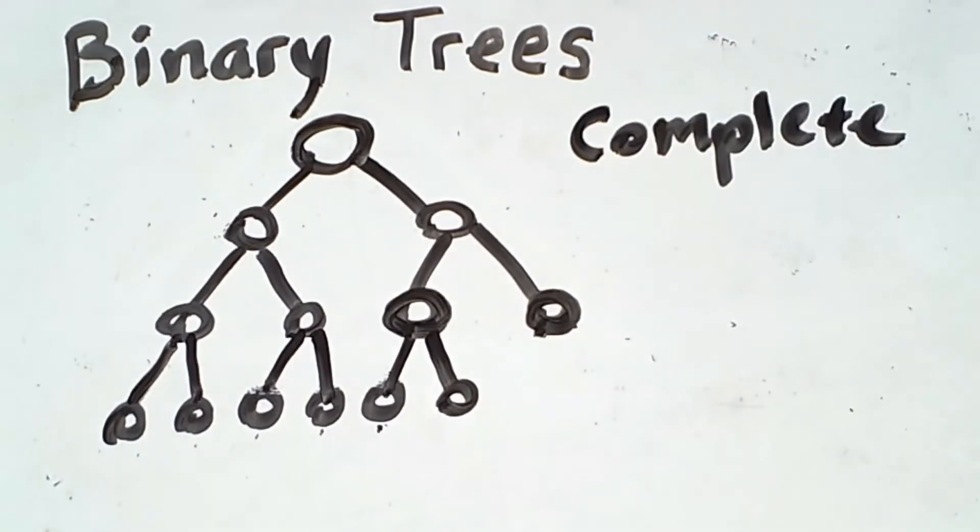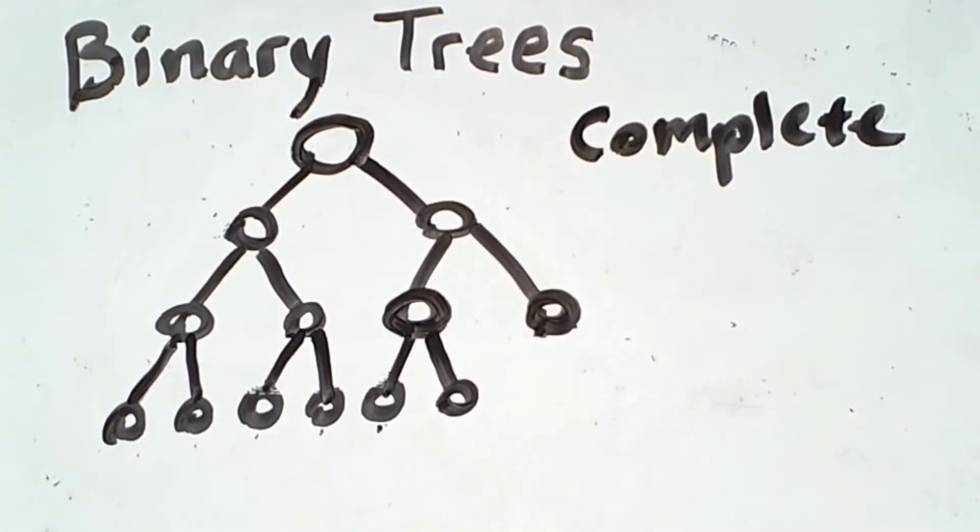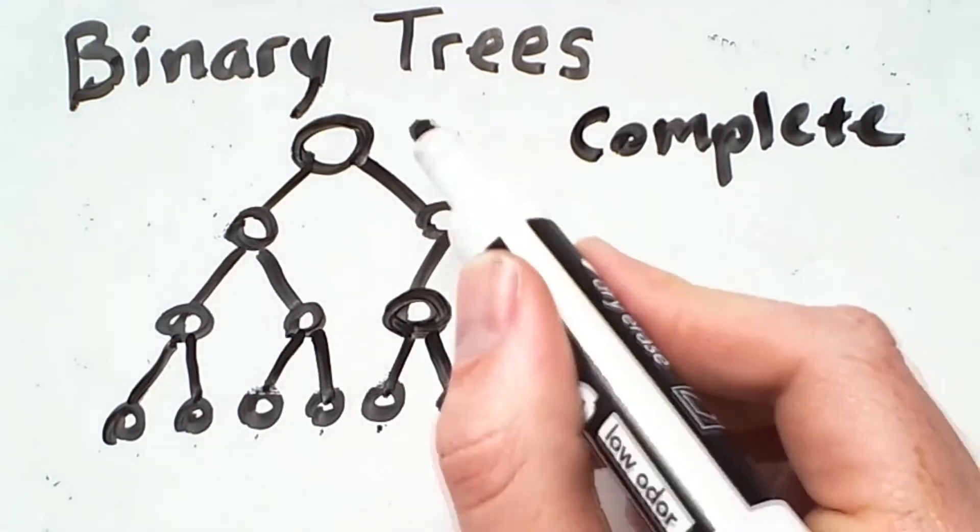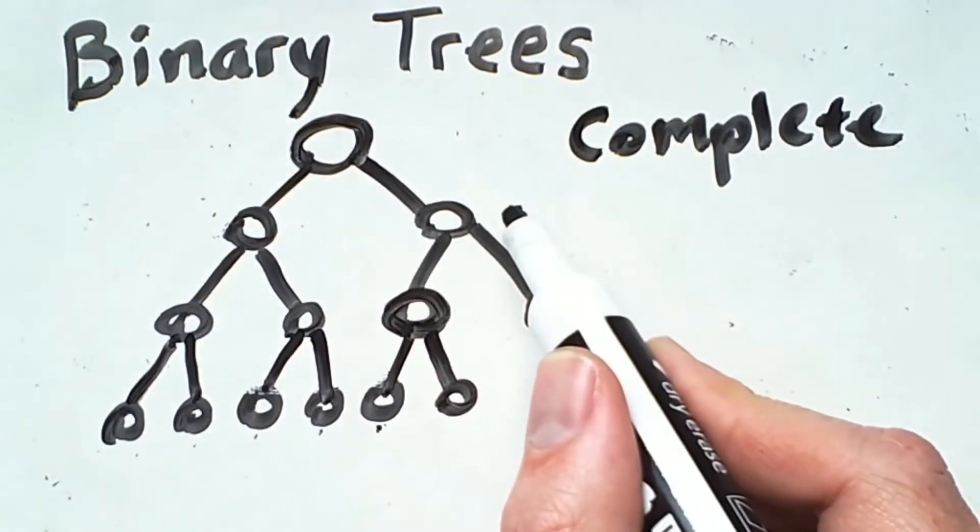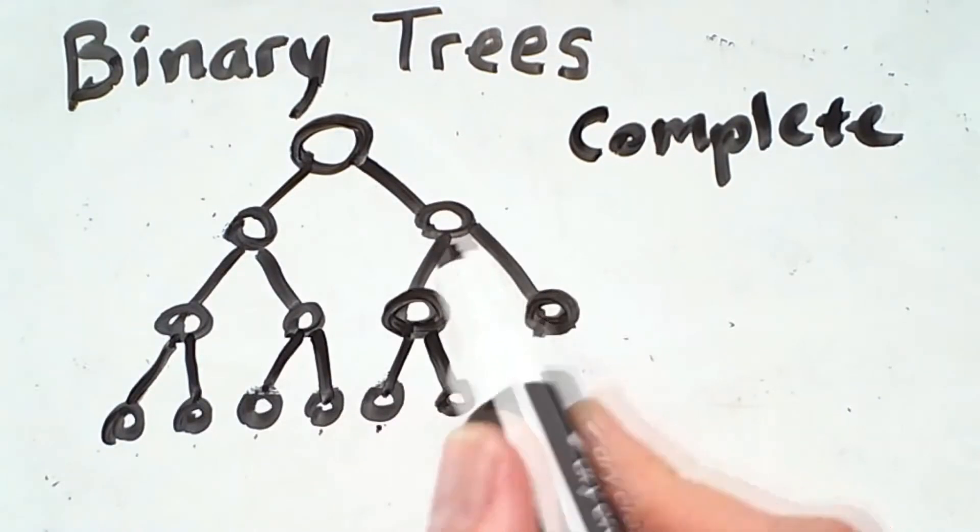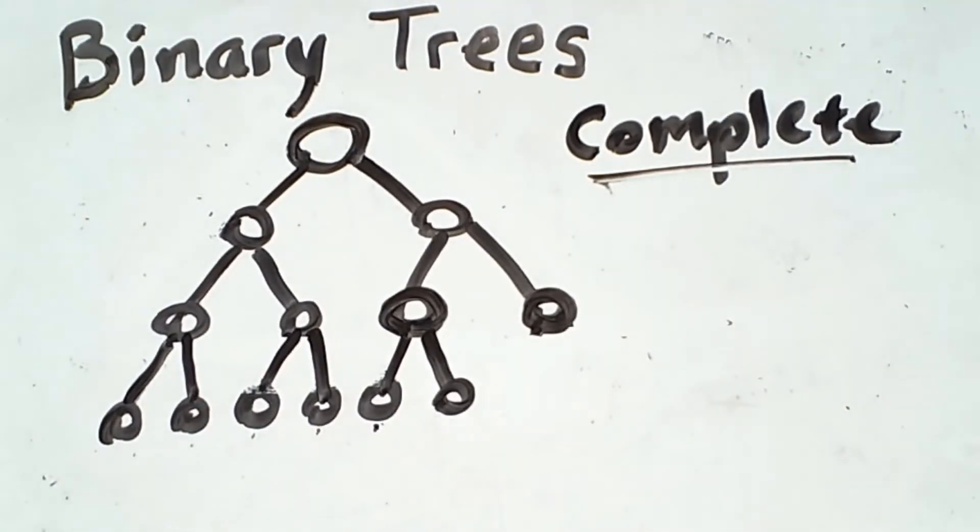Remember that in a complete tree, all levels of the tree have the maximum possible number of nodes except, potentially, the last one. So in a binary tree, level one can only have one node, which is the root node. Level two can only have at most two, and then the level beneath that can have at most four. These are all powers of two. It is only the final level, which has leaf nodes, that in a complete tree may have some number of nodes less than the maximum possible.